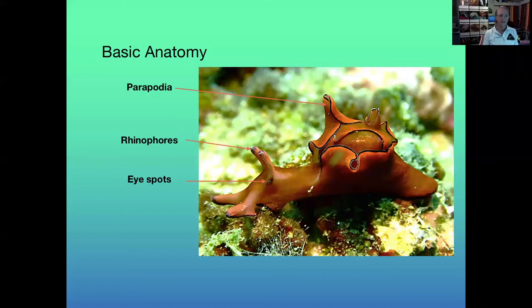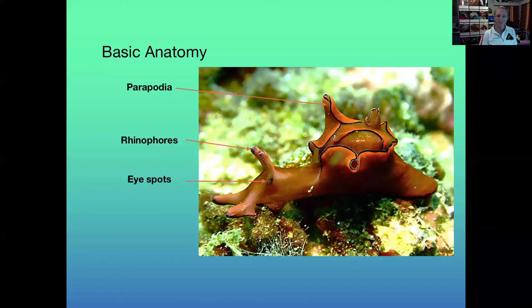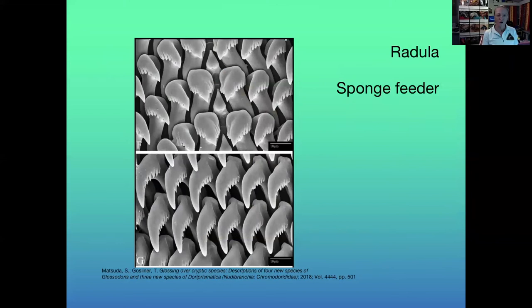This one is a sea hare. Those senses of touch and smell are really important because sea slugs don't have eyes like we do. In this one it looks like it has a really distinct eye, but it only senses light and dark. So the oral tentacles and rhinophores are really important for finding food, finding their way around, and finding a mate. This one has a very thin shell at the back, and it also has parapodia which it can use for swimming if it has to.